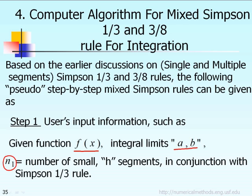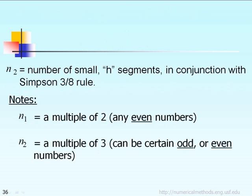is the number of segments to be used for Simpson 1/3 rule. If the user inputs n1 equal to 2, that means single segment Simpson 1/3 rule. If n1 equals 4, 6, or 8, that means multiple segment Simpson 1/3 rule.